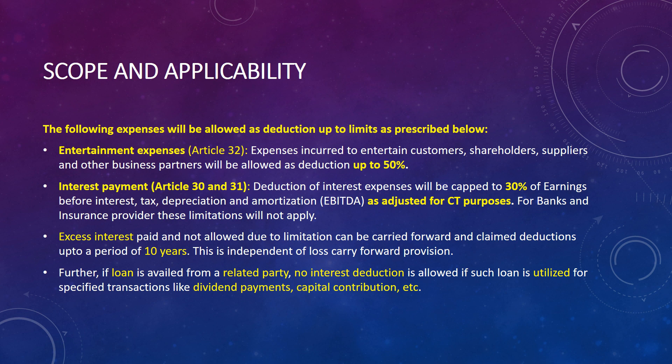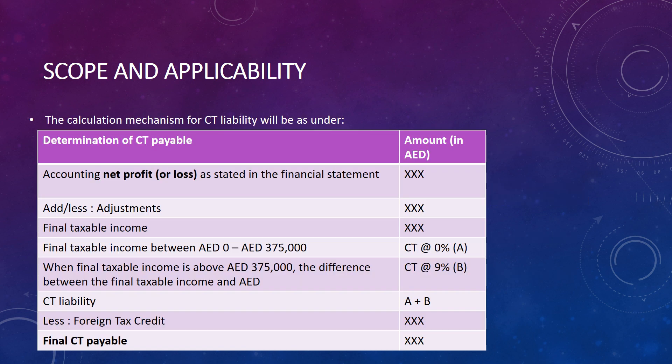The calculation mechanism for corporate tax liability works as follows: start with accounting net profit, then make adjustments — disallow 50 percent of entertainment expenditure, cap interest expenditure at 30 percent of EBITDA, and disallow other non-eligible expenditure — to arrive at final taxable income. On the first AED 375,000 of taxable income, zero percent tax applies; above that, nine percent applies. Add both amounts together, then deduct any tax paid in a foreign country, to arrive at the final corporate tax payable.